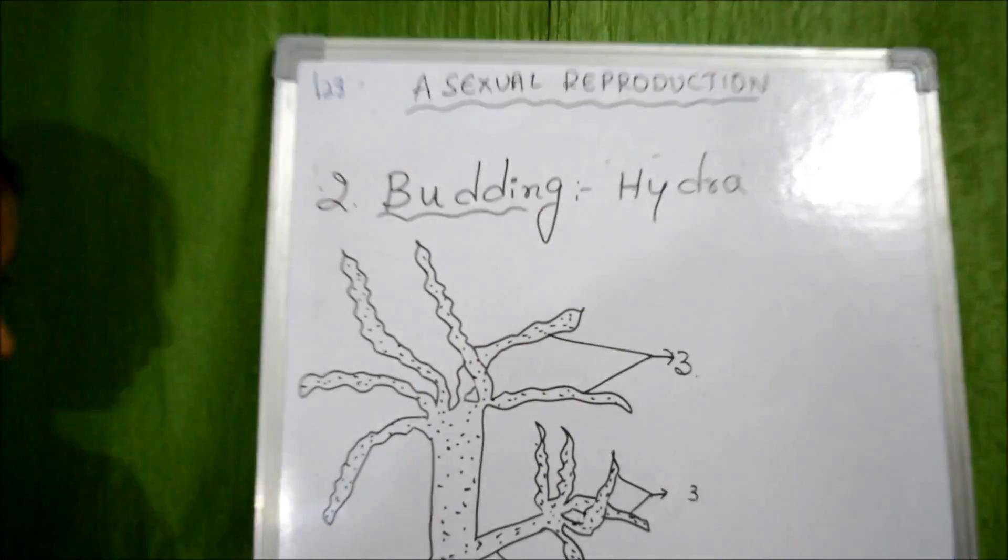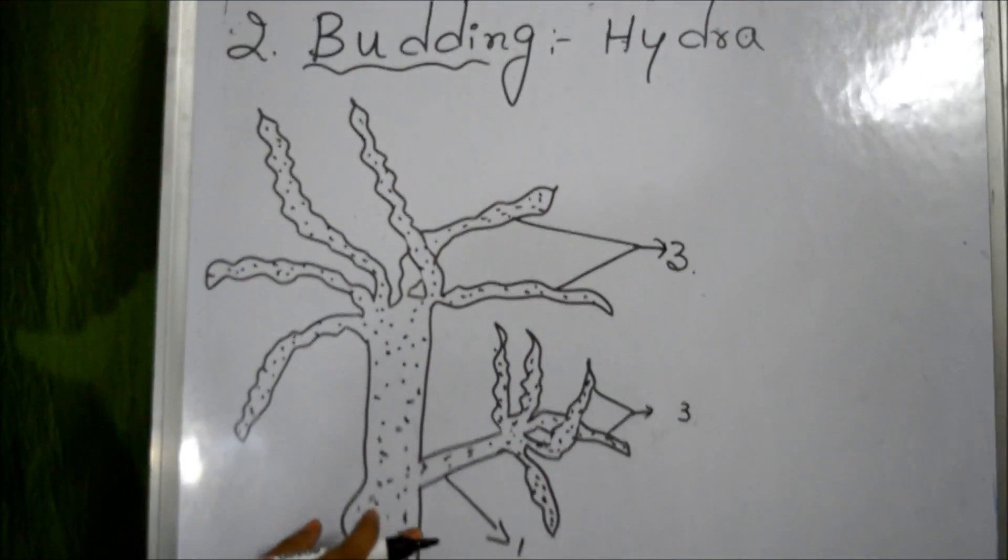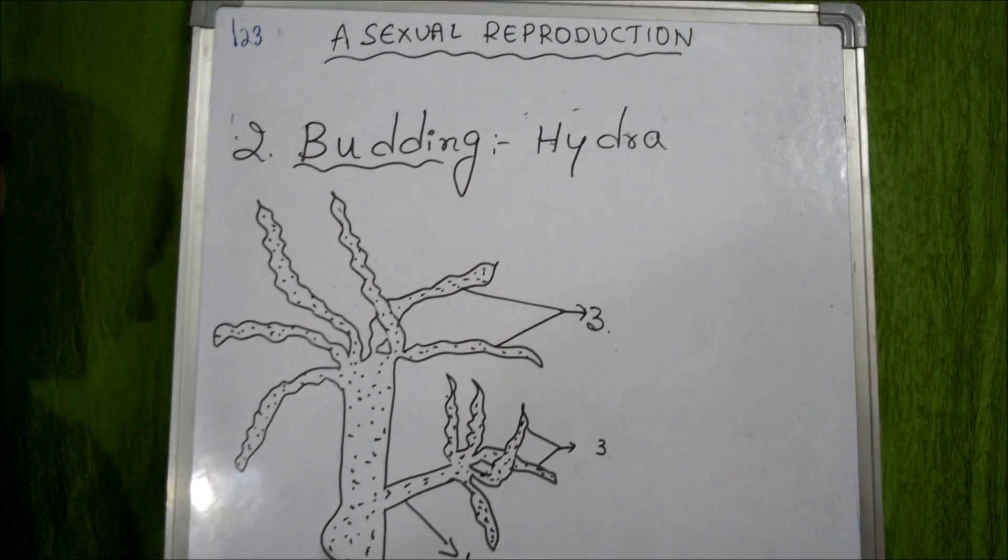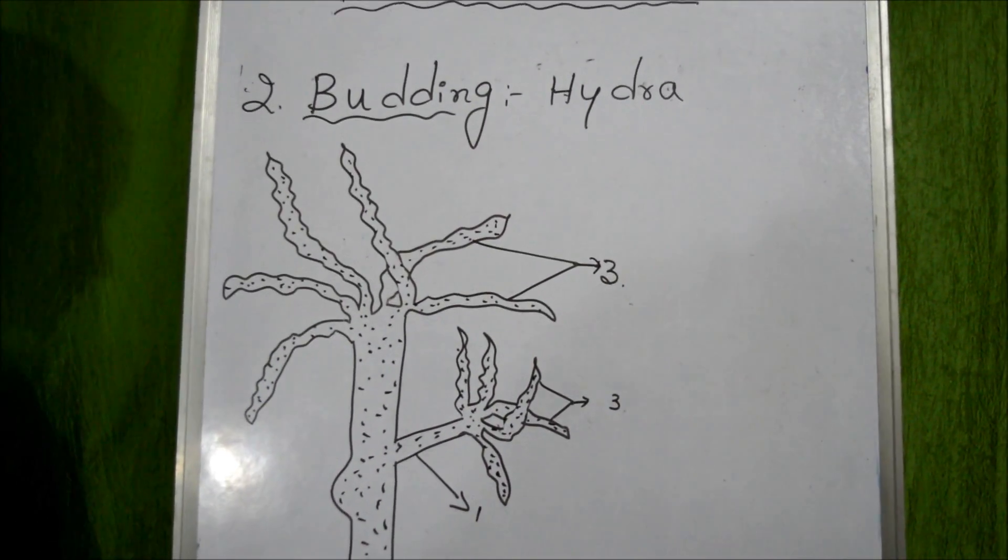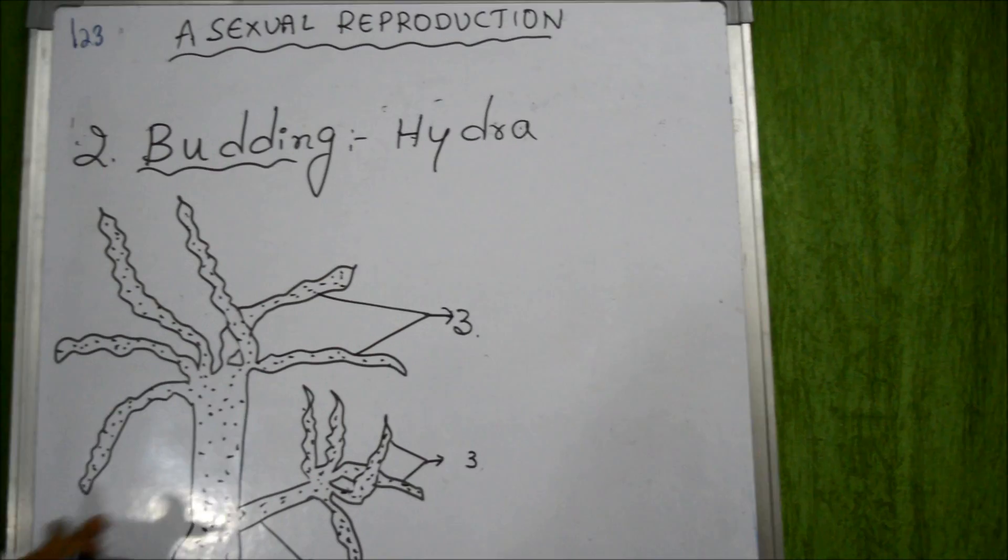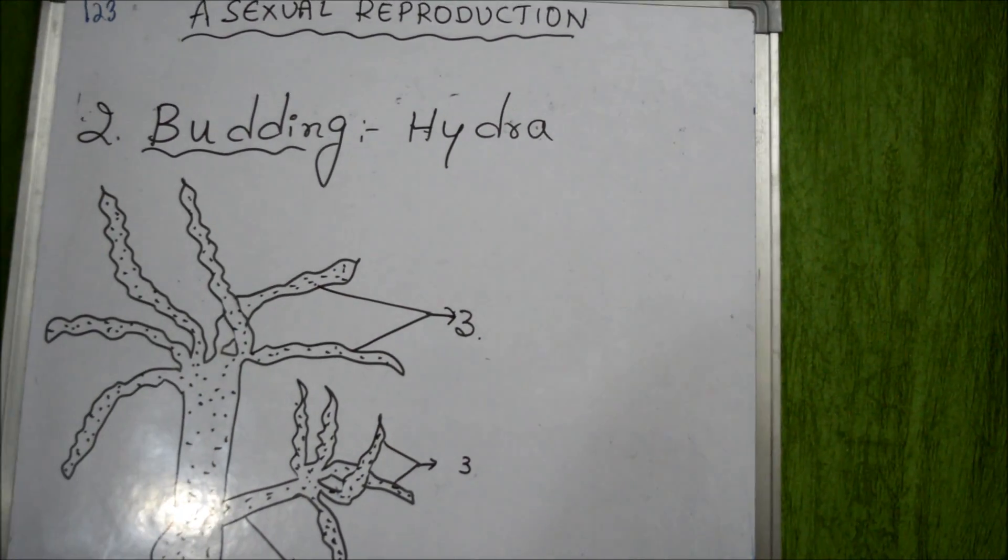Budding means a small bud which appears on the body of the parent and it develops into a new adult organism. Let us learn how this budding reproduction takes place in Hydra.